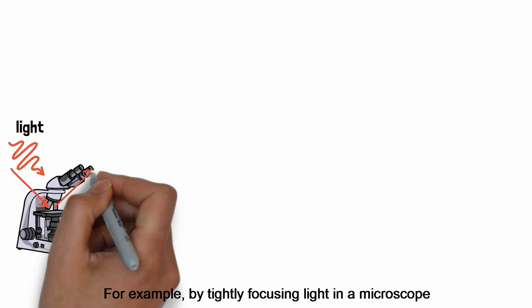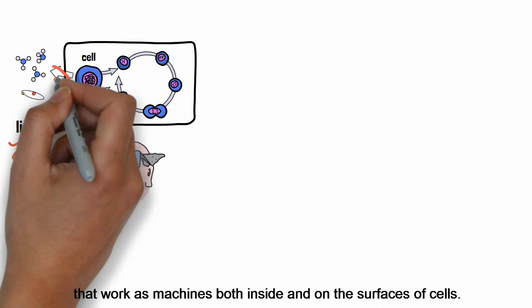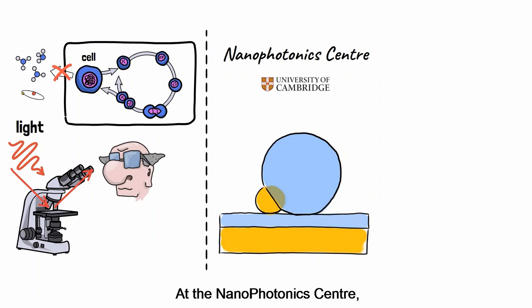Light is a very powerful tool for looking at small objects. For example, by tightly focusing light in a microscope, we can follow the behavior of living cells. However, we can't directly see much smaller things such as molecules or protons that work as machines both inside and on the surfaces of cells.